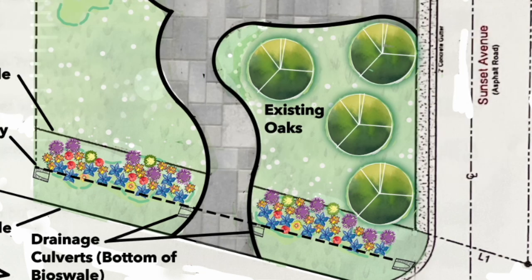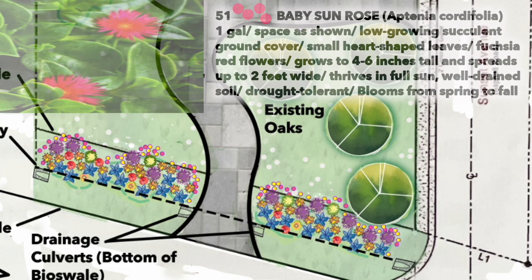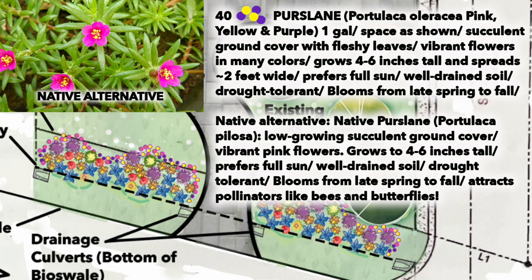Now we're winding up the design with ground covers. Baby Sunrose is a super tough, low ground cover with really bright pink-red flowers — I've done a video on it so check our channel for more. To complement the Baby Sunrose and add more pizzazz, Bonnie really likes purslane so we're adding a bunch of those. These bedding plants are going to wrap around the top and sides of the bioswale to help frame and define the edges. A good native alternative is the native purslane, botanically Portulaca pilosa, which is also a butterfly attractor.